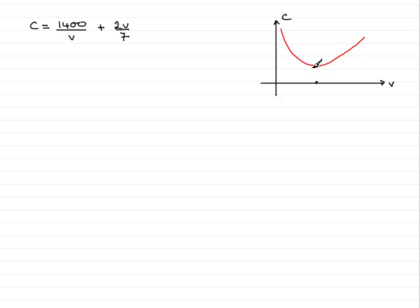And at this point on the curve, the gradient would be zero. In other words, that is dc by dv, the rate of change of C with respect to V would be equal to zero. So this is basically how we tackle this problem. We've got to find dc/dv, put it equal to zero and solve the equation for V.